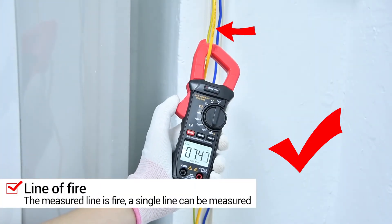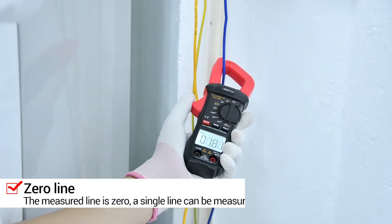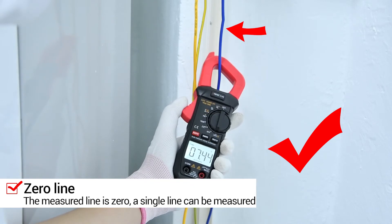The line on test is a live line and a single line. The measured line is zero. You can measure a single line.